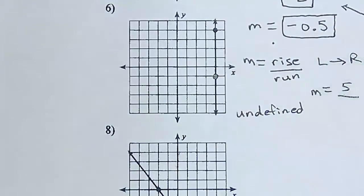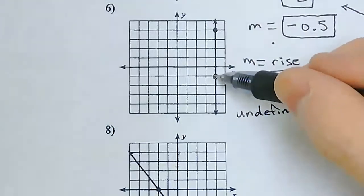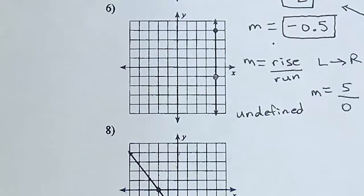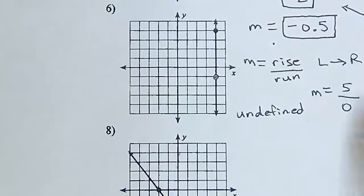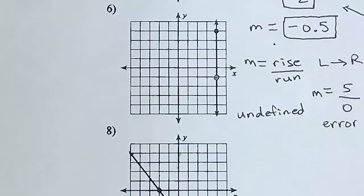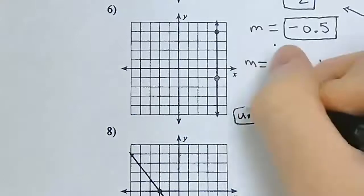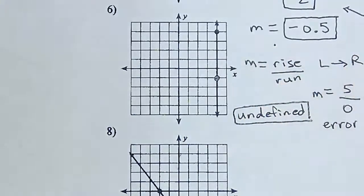In the denominator I have my run — that's how far to the right I need to go. Do I need to go to the right at all? No. So my run is going to be 0. I have 5 divided by 0, and since I'm dividing by 0, I'm not going to get a real number for my answer. In fact, if you try this in your calculator, you'll get an error because you're dividing by 0. So I'm going to write 'undefined,' because the slope of this line is undefined. And that's going to be the case for every vertical line.